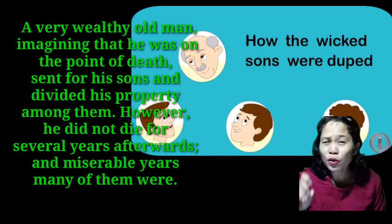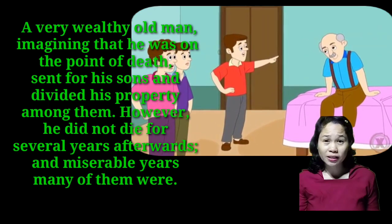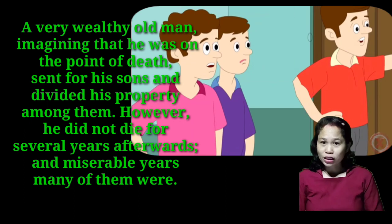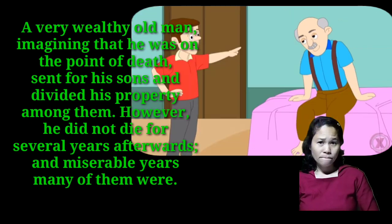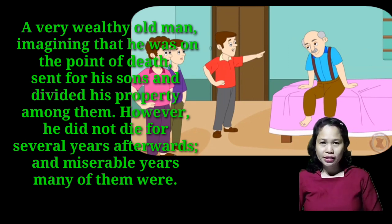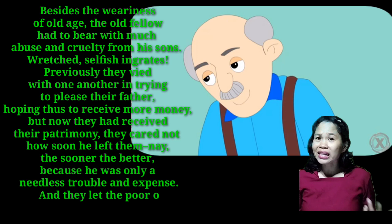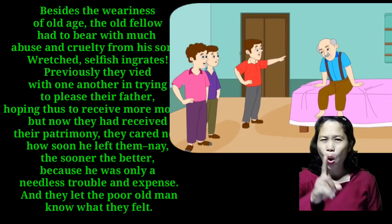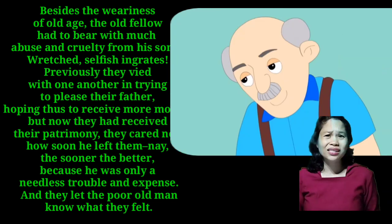Don't forget to take note of the important information found in the story. A very wealthy old man, imagining that he was on the point of death, sent for his sons and divided his property among them. However, he did not die for several years afterwards, and miserable years many of them were. Besides the old man's age, the old fellow had to bear with much abuse and cruelty from his sons.